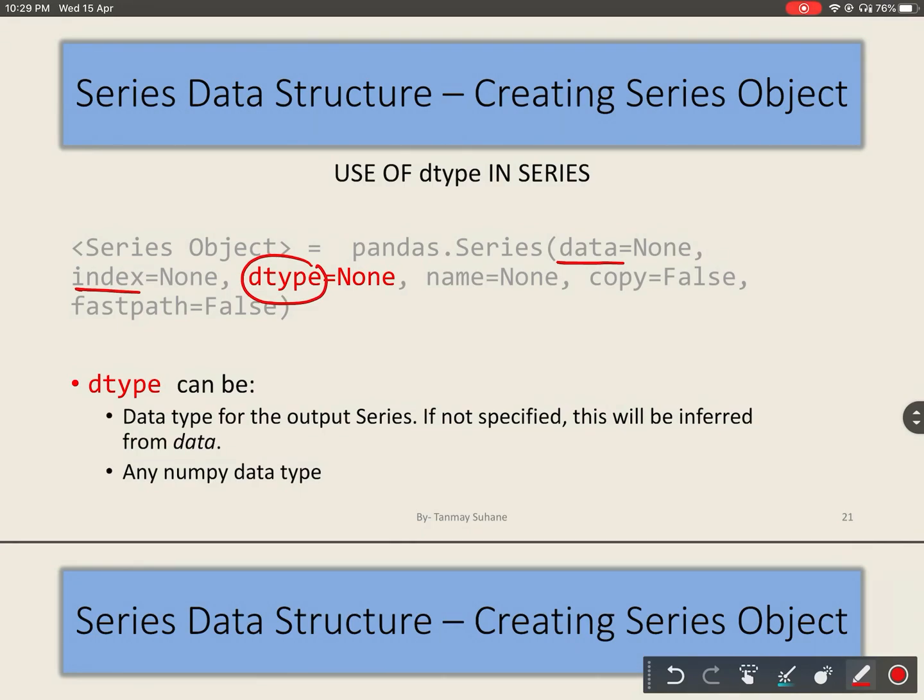Now let us begin. Let us first discuss what is dtype. So dtype is a data type for series data. Let us consider that this is a series object and this is its data. So these data must have some data type.